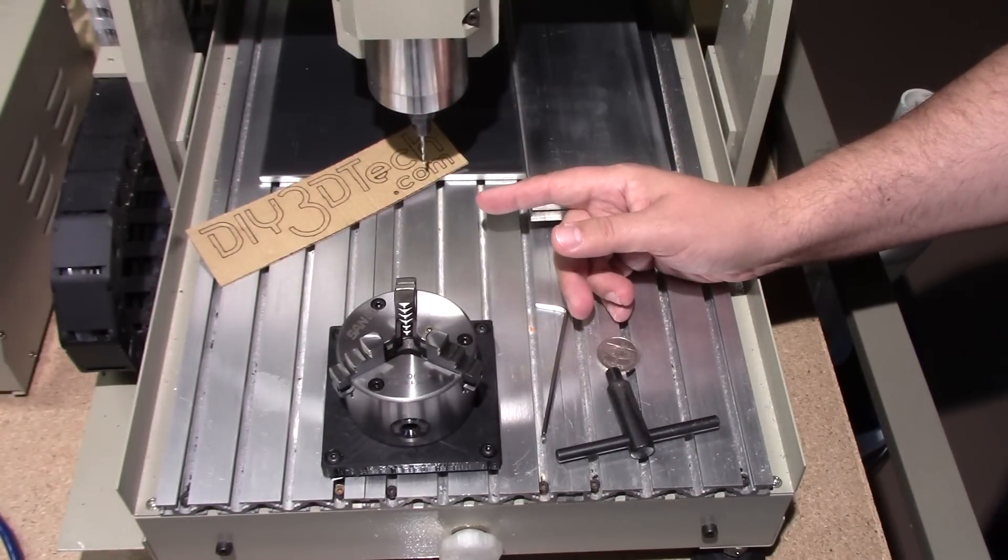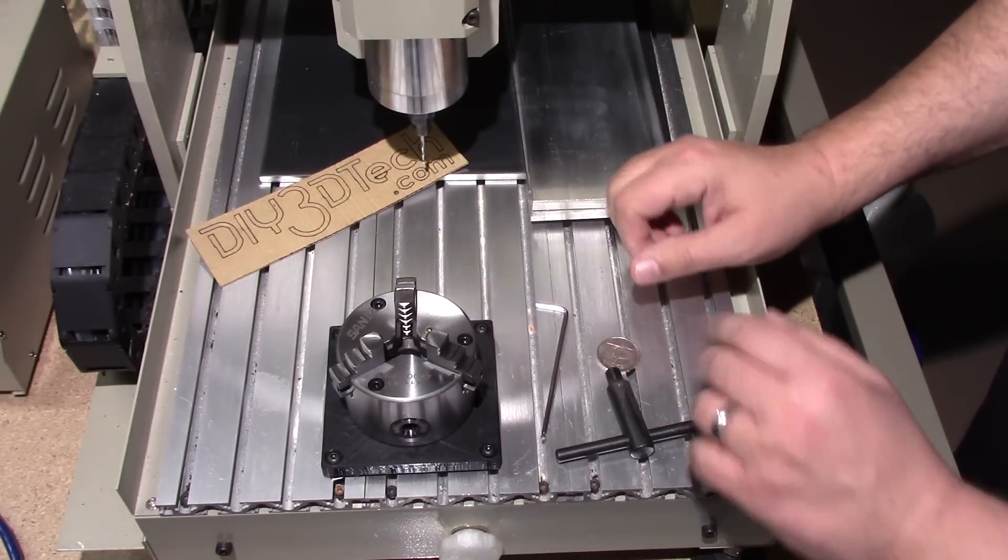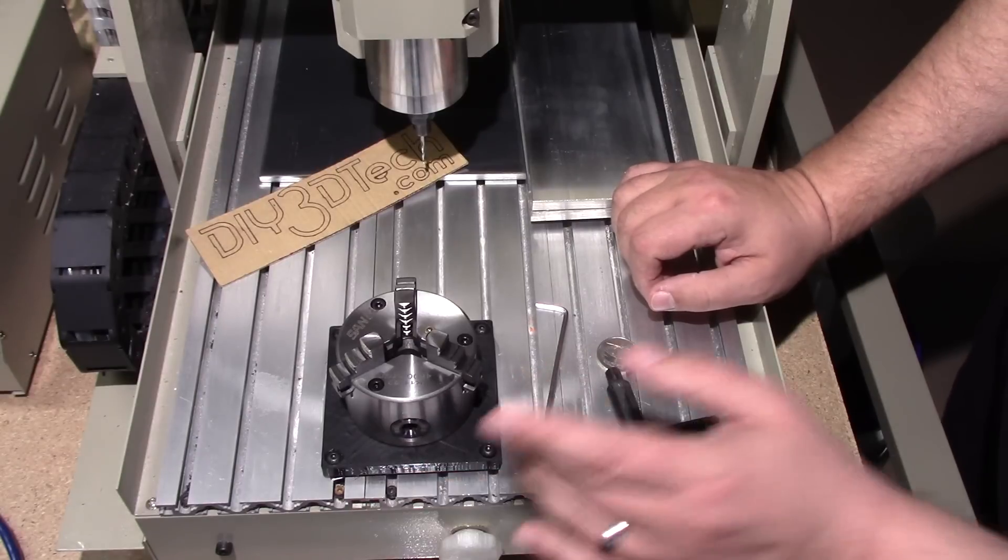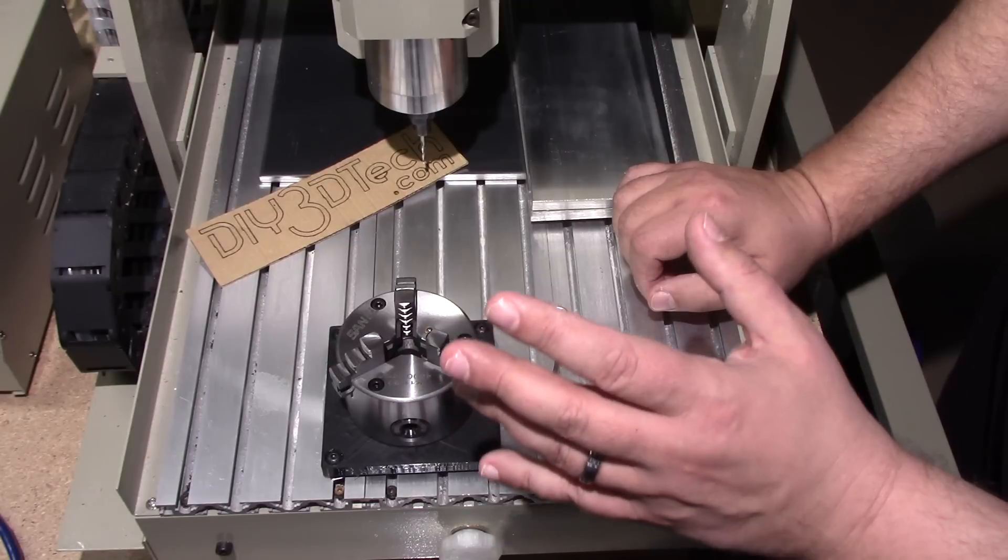Welcome to this episode of DIY3DTech.com. In this episode we're going to be talking about this fixture I whipped up and 3D printed for the 3040, and matter of fact it should work with the 3020, the 3060, any basic CNC that has this type of ribbed or fluted table.